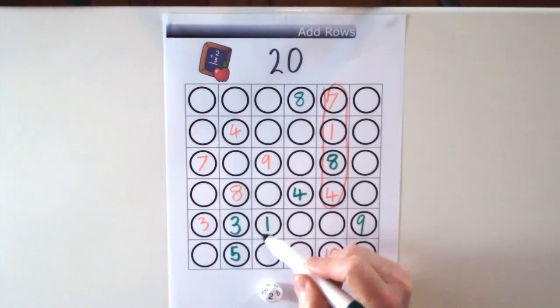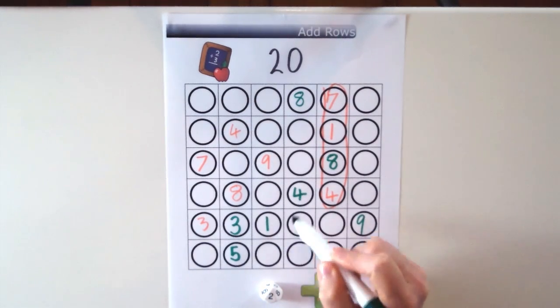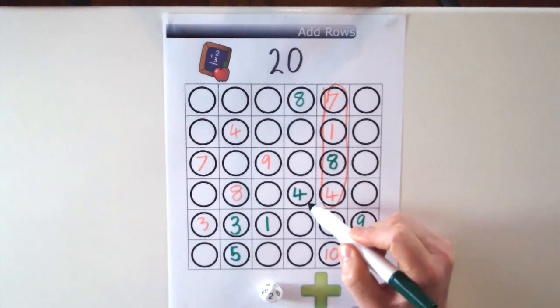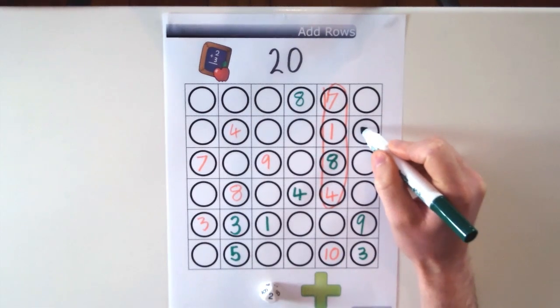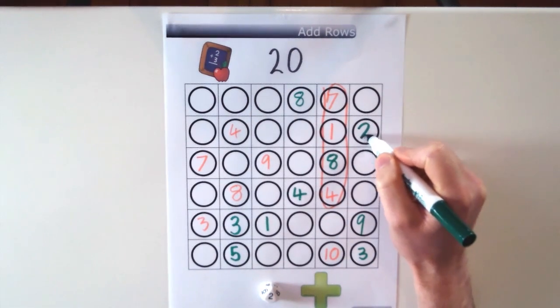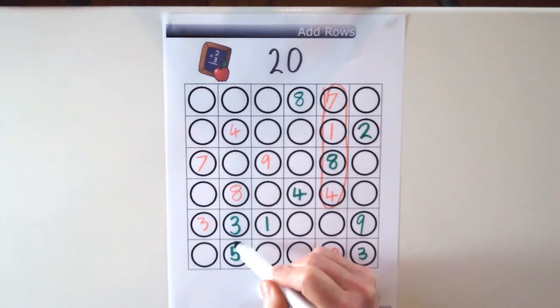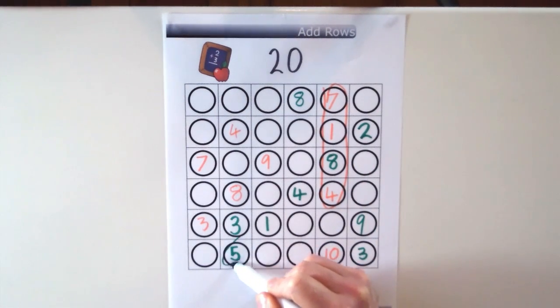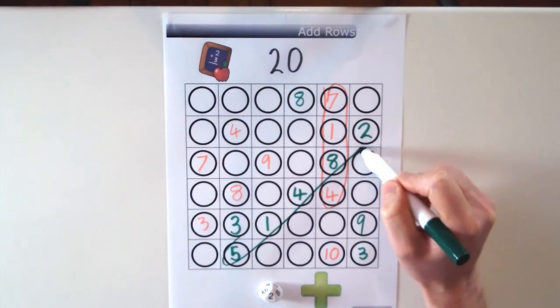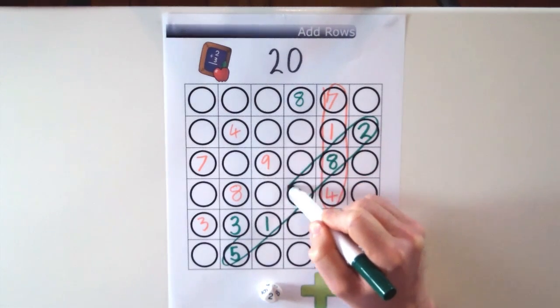So green has just rolled a 2 and in a row here we have 5 plus 1 which is 6 plus 4 which is 10 plus 8 which is 18. So green can put the 2 there. So 18 plus 2 equals 20 and then they can group that whole diagonal row together.